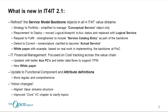What is new in IT4IT v2.1? It's actually not a lot of things, but there's a lot of thinking behind those few things. We changed the service backbone a little bit, we simplified the conceptual service, we changed the logical service, and we included the service catalog entry in detect to correct, now called actual service instead of actual service CI. That all seems very simple, but the important thing is the white paper behind it.